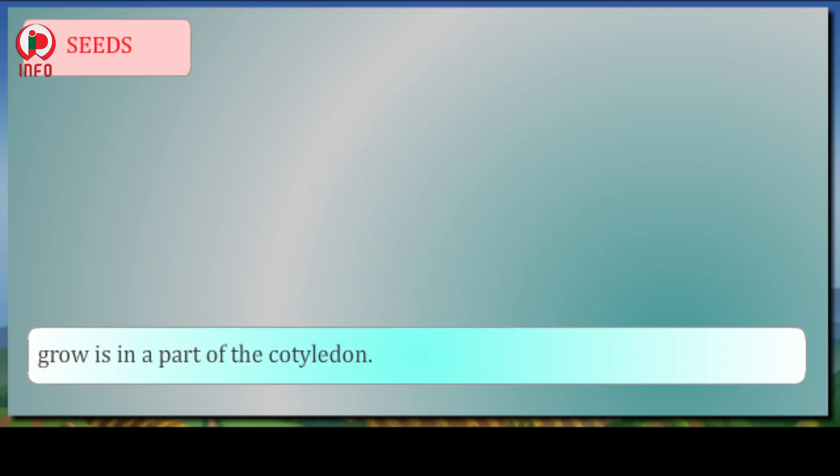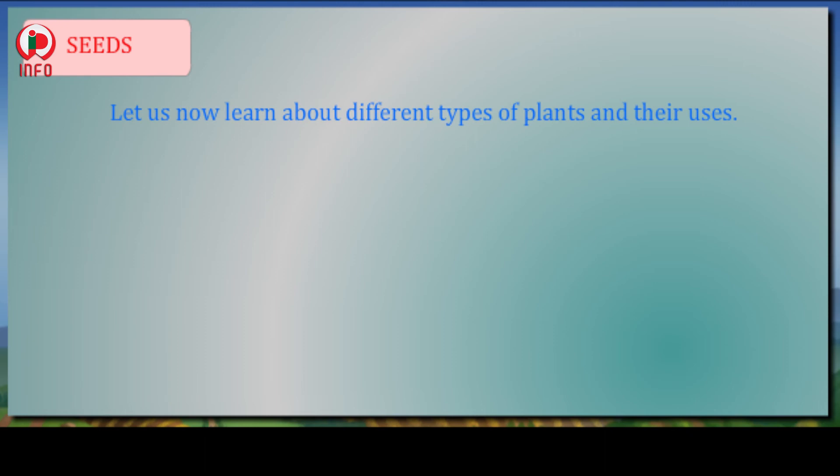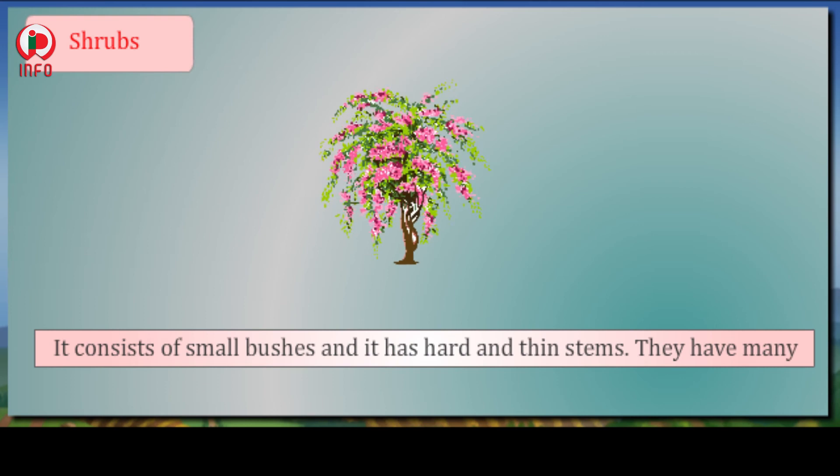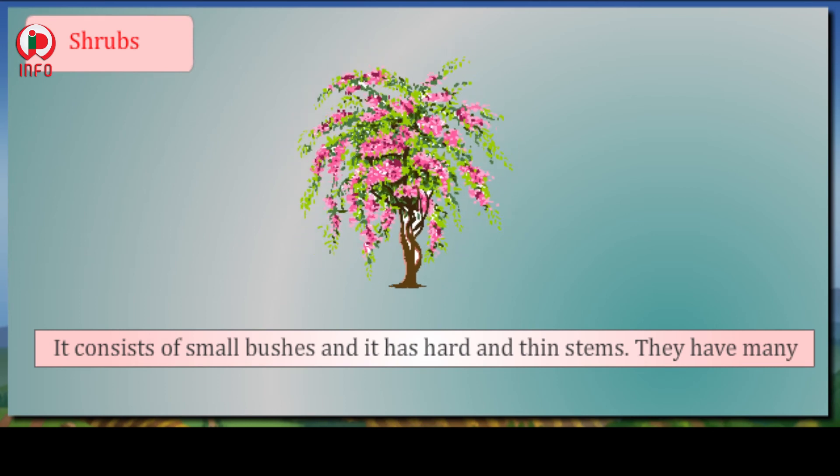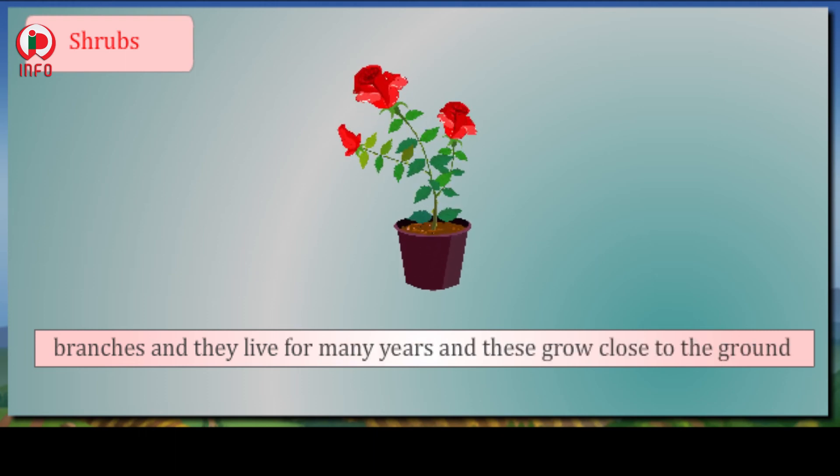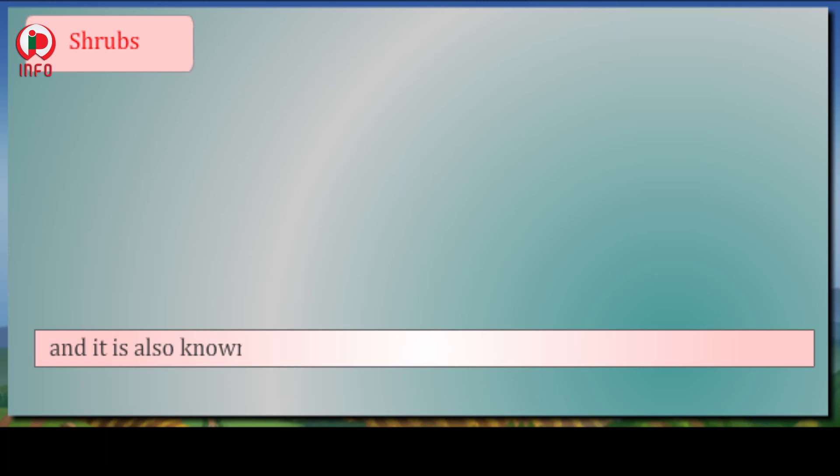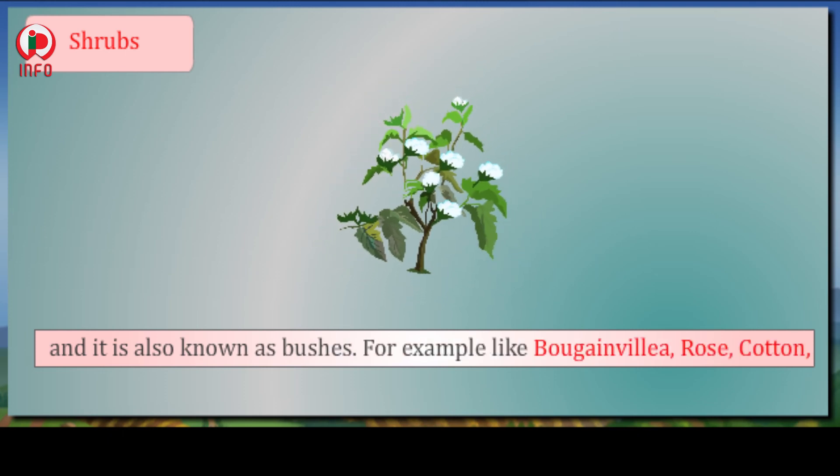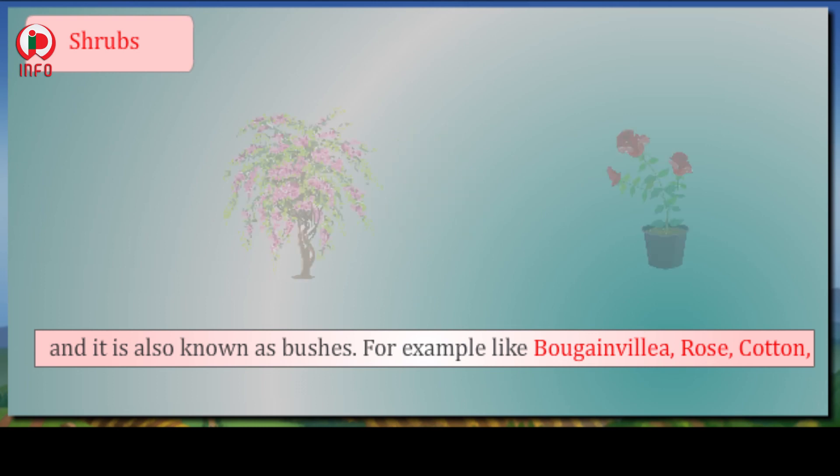Let us now learn about different types of plants and their uses. Types of plants: shrubs, herbs, climbers, creepers, thorny plants, water plants. Shrubs: It consists of small bushes and has hard and thin stems. They have many branches and live for many years. These grow close to the ground and are also known as bushes. Examples: bougainvillea, rose, cotton, jasmine, hibiscus, banana.